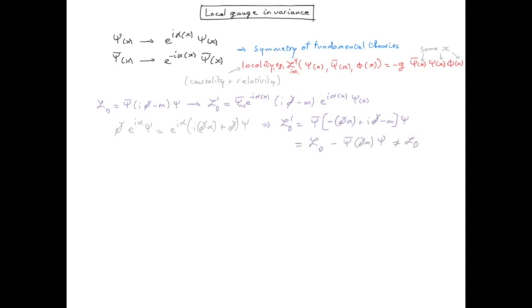So we see that the Dirac Lagrangian is not local gauge invariant because it is transformed under the local gauge transformations.